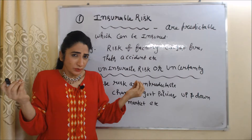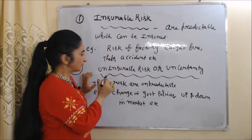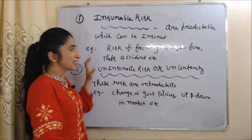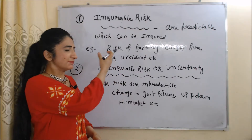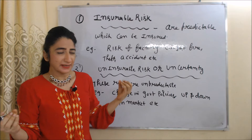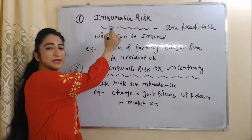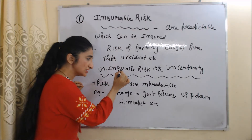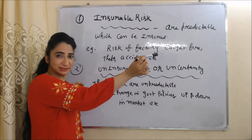Now we are going to talk about what are insurable risks and what are uninsurable risks or uncertainty. Insurable risks are predictable risks. For example, risk of a factory catching fire, theft, or accident. According to this theory, profit is not a reward of insurable risk. Profit is only the reward of uninsurable risk, or we can say profit is only the reward of uncertainty.